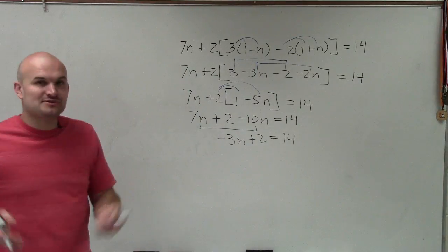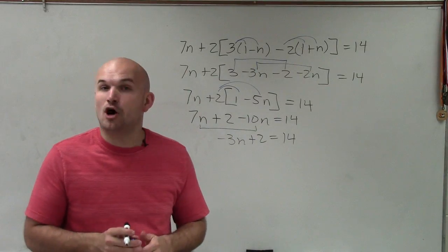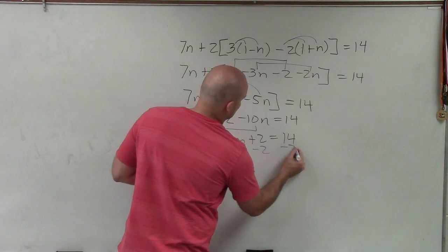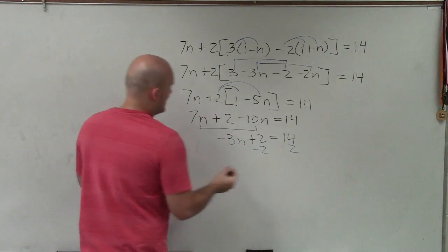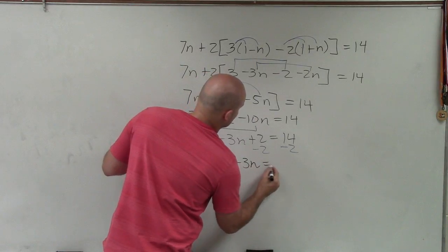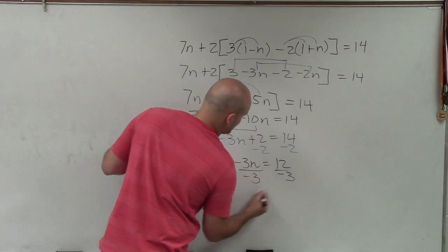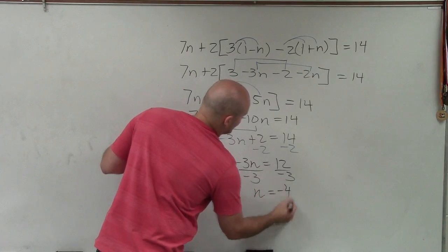Now I have a two-step equation. Now I can go and solve using my regular solving techniques. So to do that, I will just subtract the 2 on both sides. And I get negative 3n equals 12, divide by negative 3, divide by negative 3, and n equals negative 4.